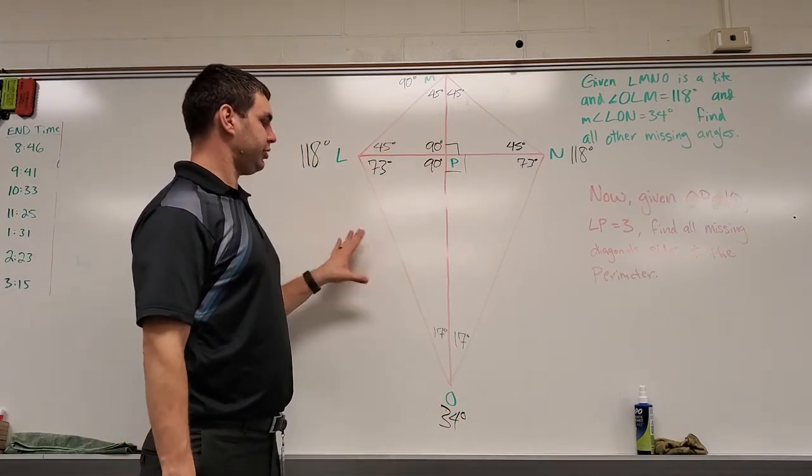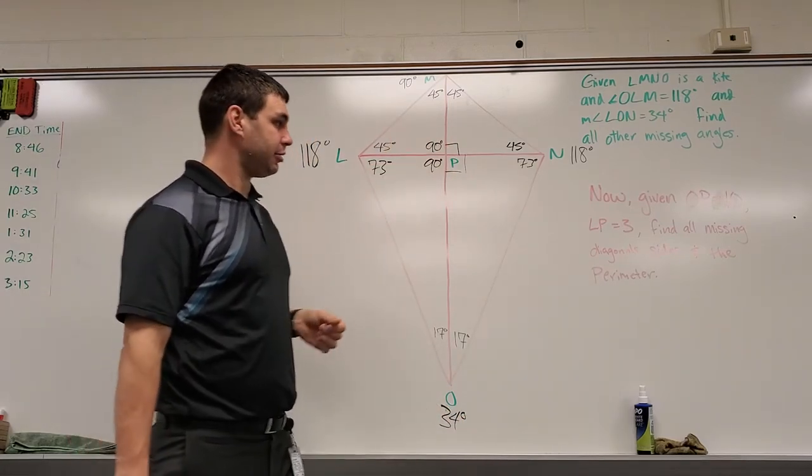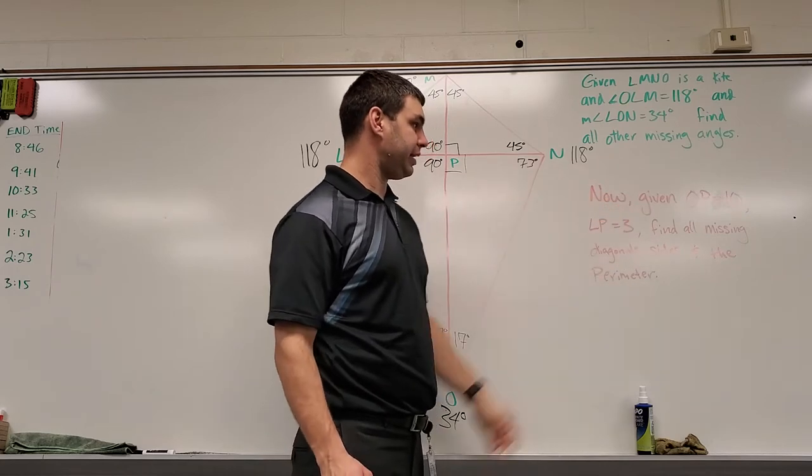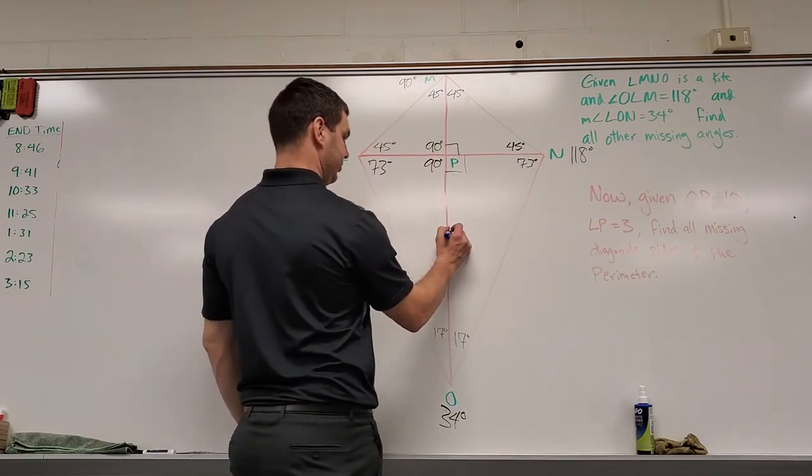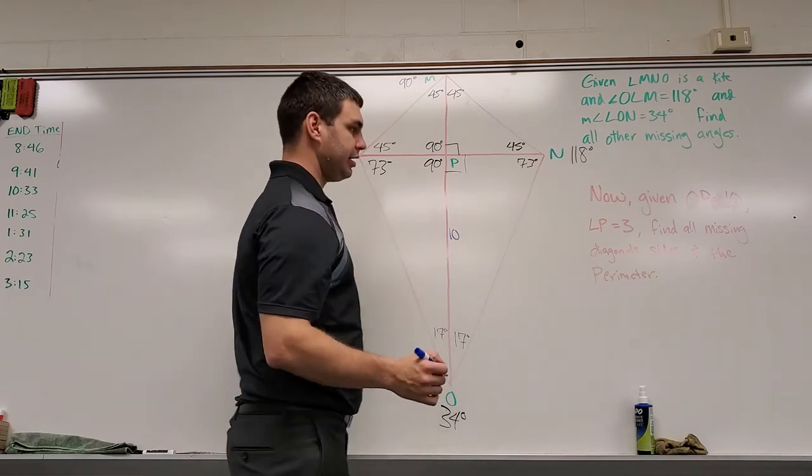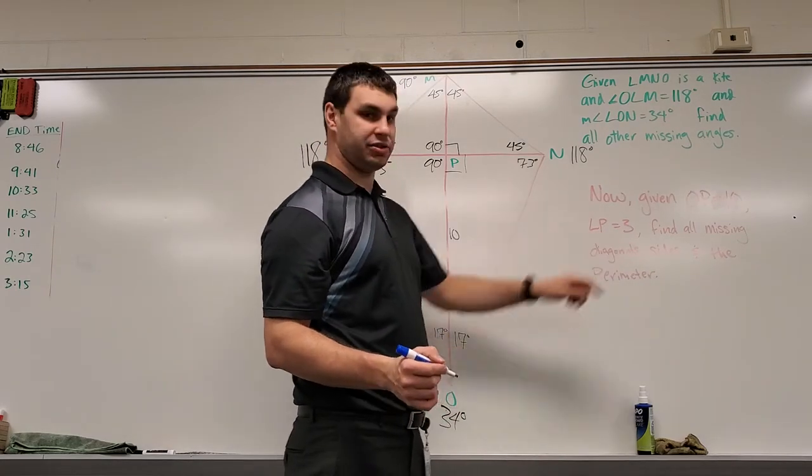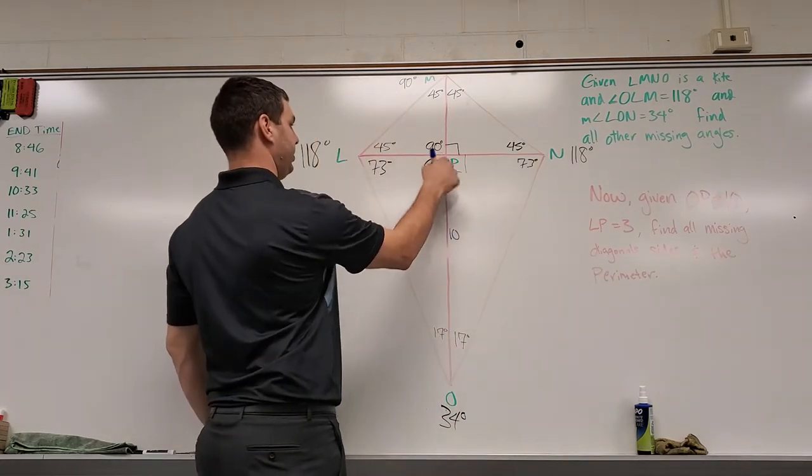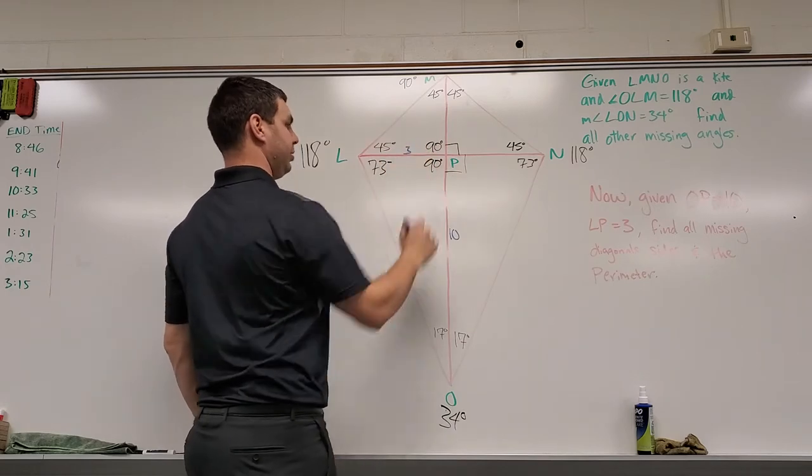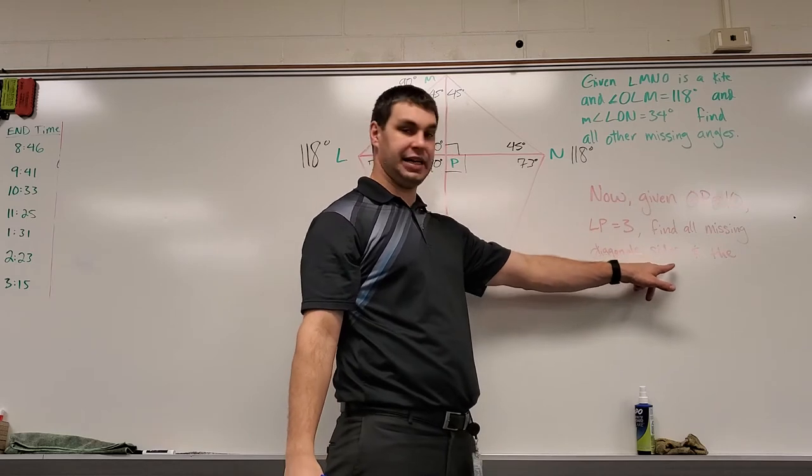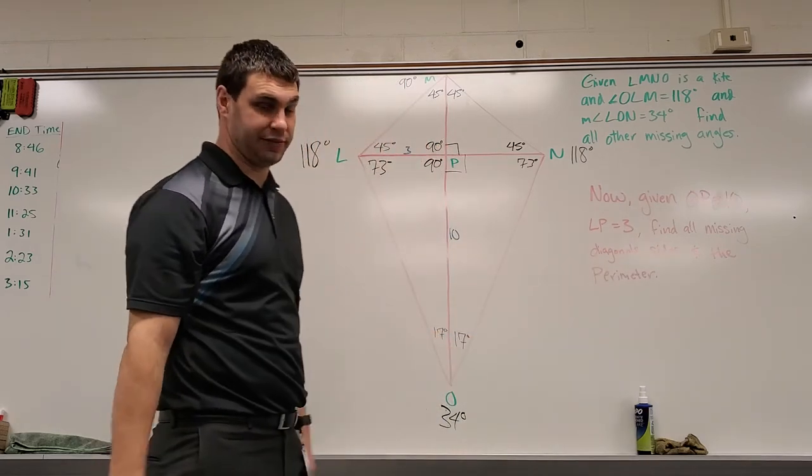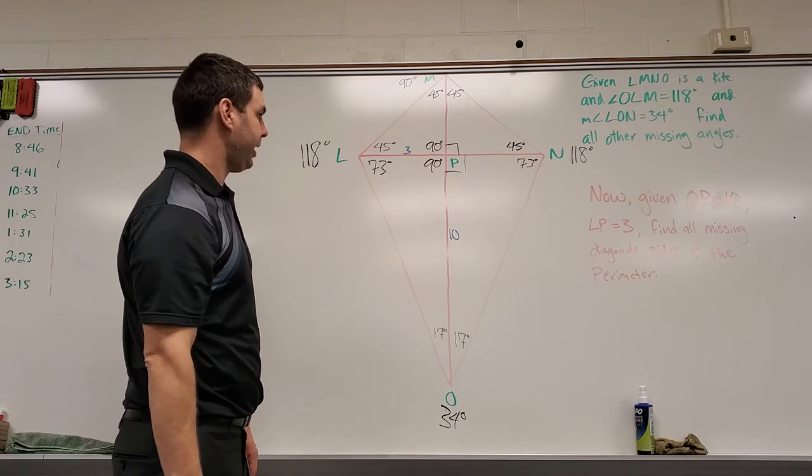We just got done finding all the angles in our kite. Now, what we're going to do, it says I'm given OP is 10, so OP, that's this part here, is 10, and LP is 3, this part of that diagonal. It says find all missing diagonals, sides, and the perimeter of this kite. So let's see if we can handle that.